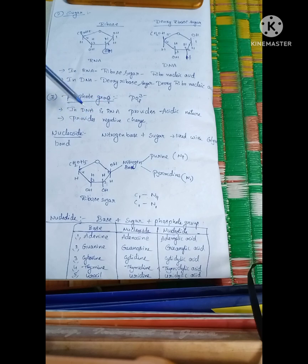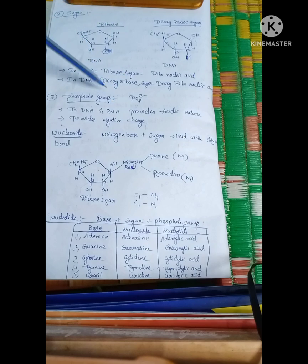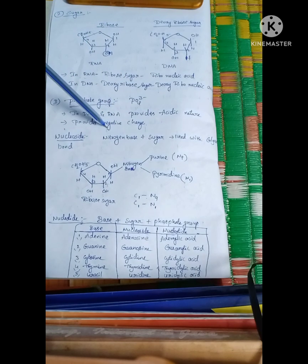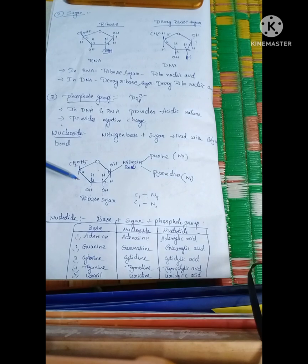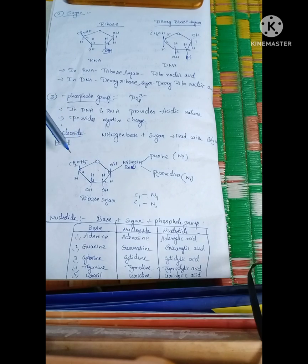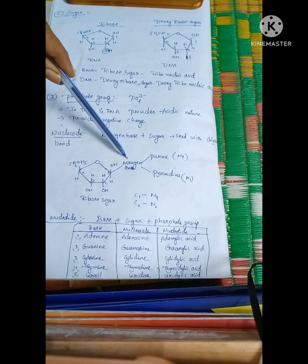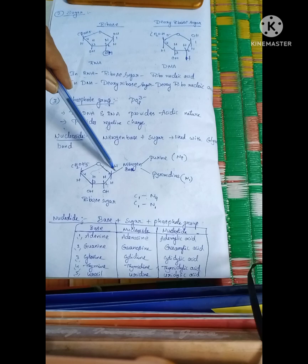Now we will discuss nucleoside and nucleotide. A nucleoside is formed when ribose sugar, at the first carbon position, is joined to a nitrogen base, linked by means of a glycosidic linkage.